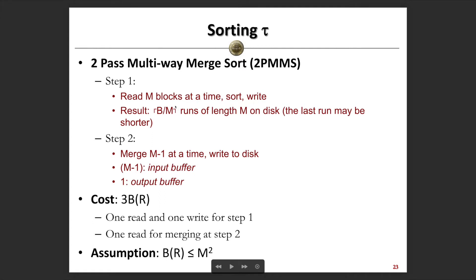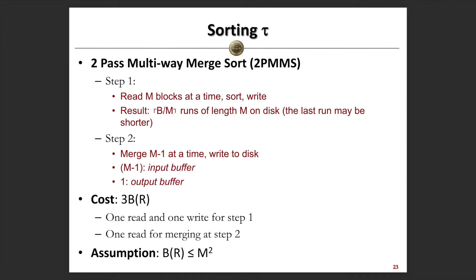We read M blocks into memory and do the sorting for each block, preparing blocks that are sorted in some order. This process may continue with multiple runs — specifically B divided by M runs, where B denotes the number of blocks available for the relation and M denotes the memory size. We have to do this process multiple times: each time we read M blocks from disk into memory and write the sorted result back to the disk.